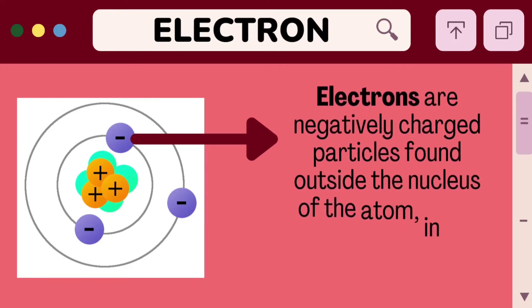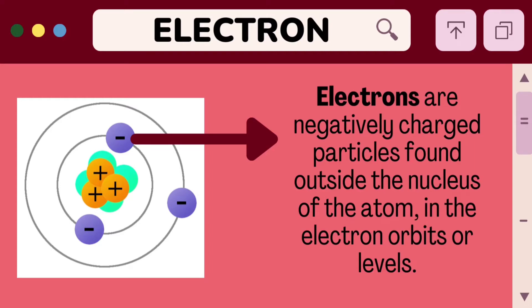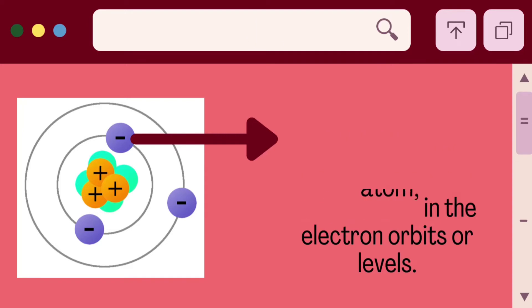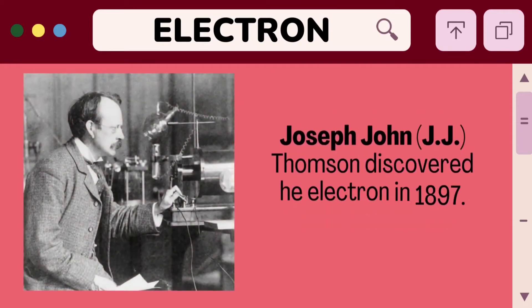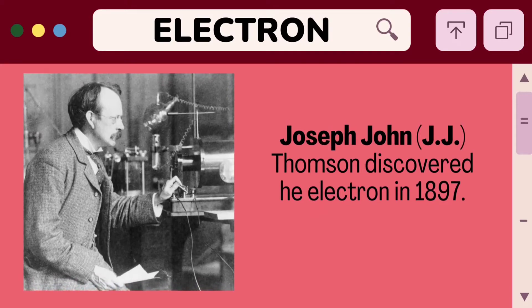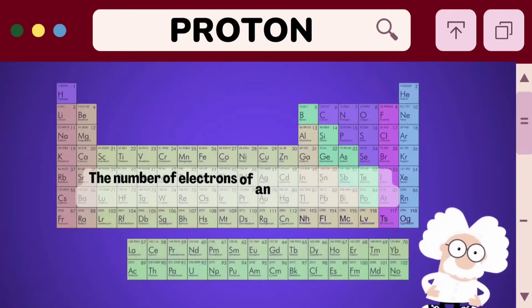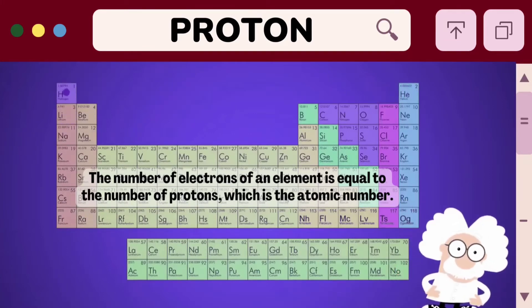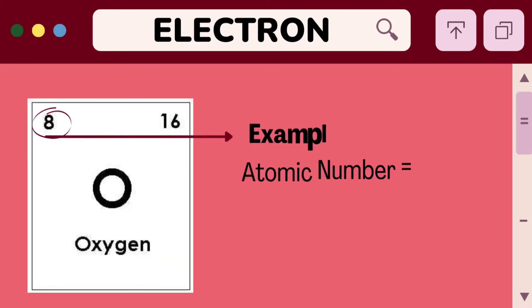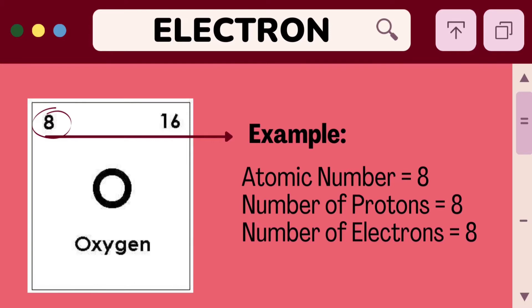Electrons are negatively charged particles found outside the nucleus of the atom, in the electron orbits or levels. Compared to protons and neutrons, electrons are many times smaller. J.J. Thomson discovered the electron in 1897. The number of electrons of an element is equal to the number of protons, which is the atomic number of an element. Oxygen, for example, has an atomic number of 8. Thus, its number of protons and electrons is equal to 8.